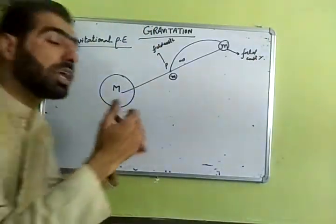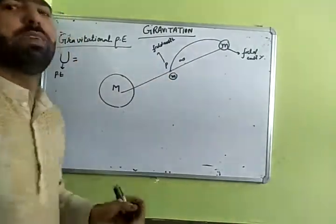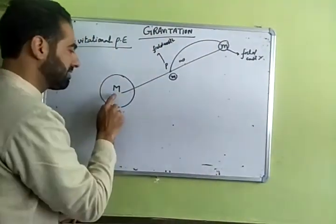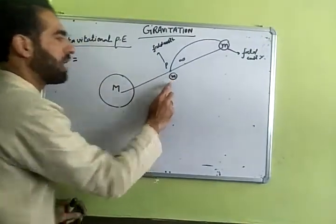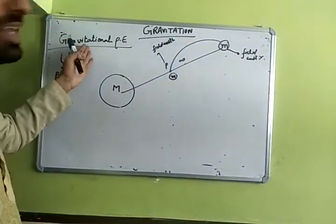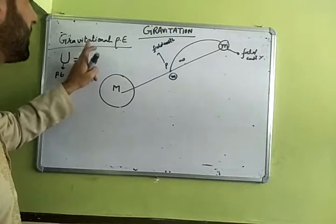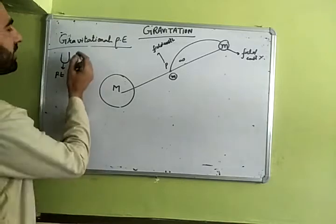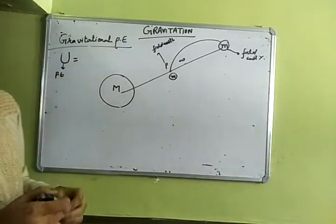The amount of work done in bringing a body from infinity to that point will get stored in capital M and small m in the form of potential energy, known as gravitational potential energy. Remember, gravitational potential energy is not stored by one body; it is always stored by a pair of two bodies, a system of two bodies.